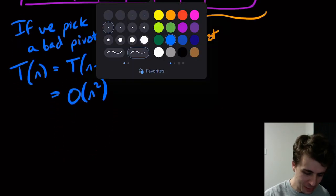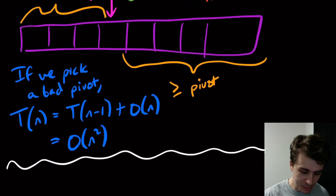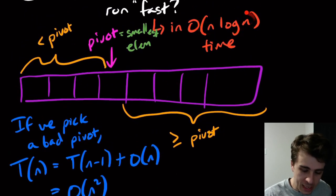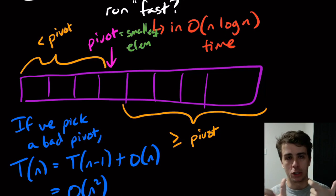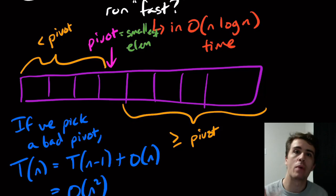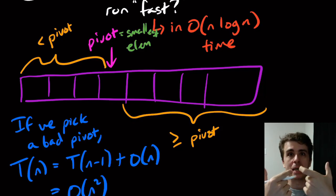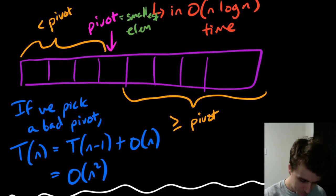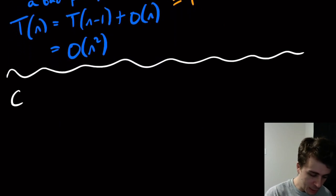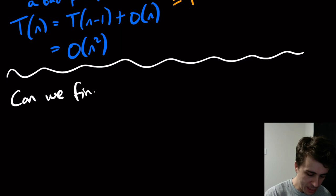There's actually a good reason for that name. To achieve O(n log n), we need the two sides of the partition to be roughly equal. If we can make them equal, we get two sides of length n/2, and the same recurrence as merge sort — which gives O(n log n). So the real question is: can we find a good pivot?